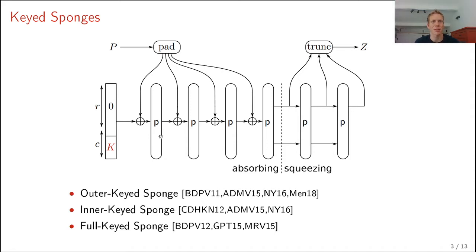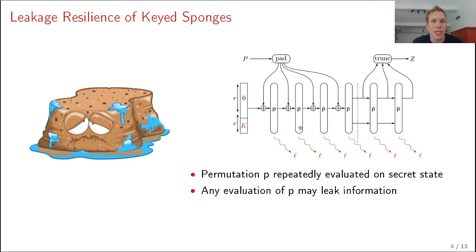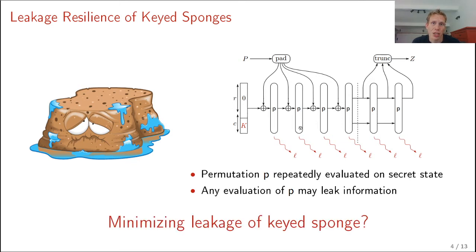In the full keyed sponge, the plaintext is padded and split into b-bit blocks, which are compressed one at a time. This is a very efficient and popular construction. At the same time, once the state is secret, all subsequent states will be secret. So if we consider this construction in the leaky setting, the attacker can get quite some leakage from the secret state. This brings us to an important question: can we minimize the leakage of the keyed sponge?